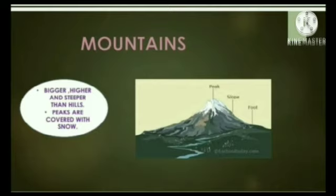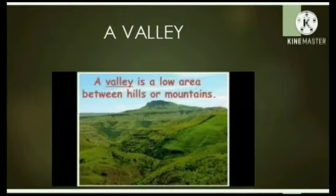Children, look at this picture. I hope you all are familiar with this type of landform. Look at the land — it is flat. So, a plain is a flat area of land. Many rivers flow through it. The capital of India, New Delhi, is an example of a plain. It is near the river Yamuna.